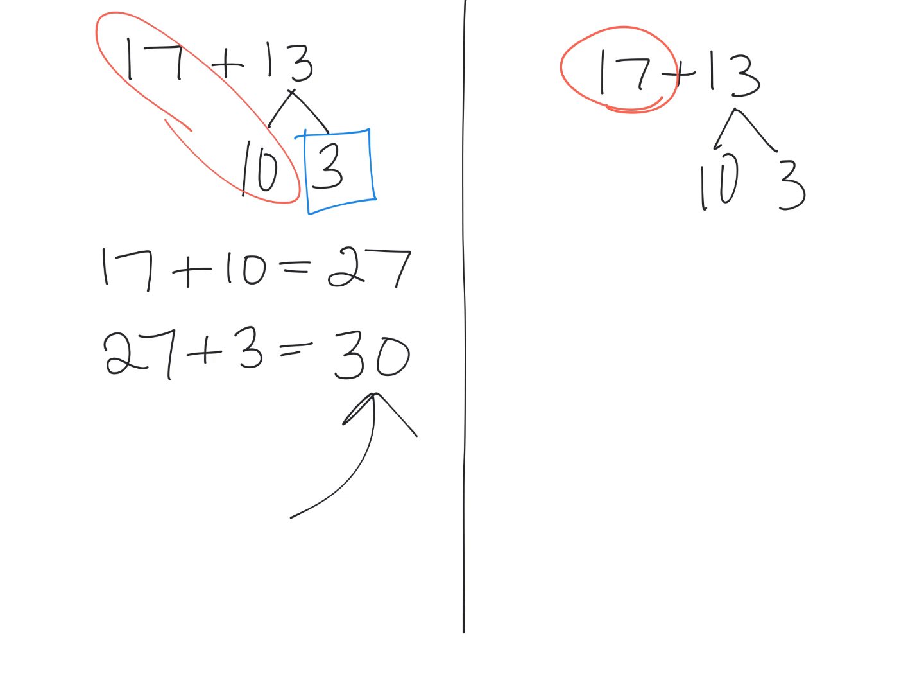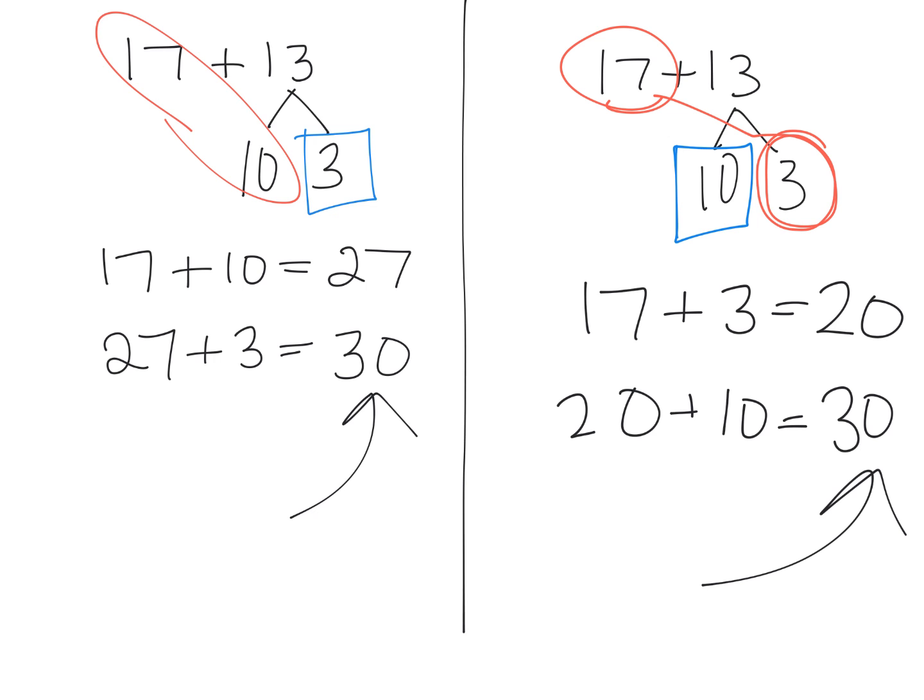So I'm going to circle the 17 and the 3. And that's what we're going to add first. So in this case, 17 plus 3 gives us 20. Now I'm going to take that 20, and I'm going to add in the 10 that we have left over. So 20 plus 10 gives us 30. And you see that we ended up with the answer of 30 in both cases. Here we added the tens first. Here we added the ones first.